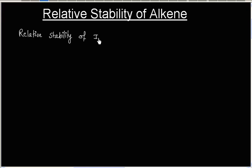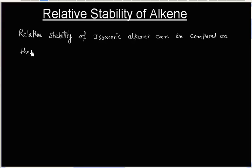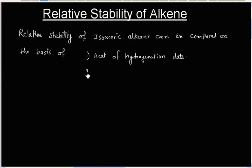The relative stability of isomeric alkenes can be compared on the basis of following data: heat of hydrogenation data and heat of combustion data. Let us consider the following isomeric alkenes.